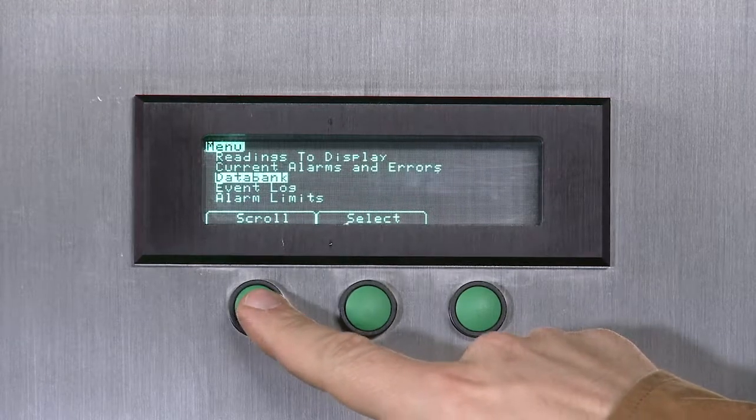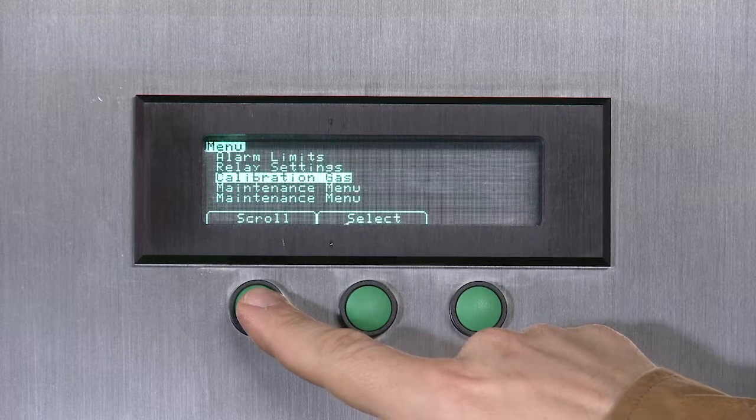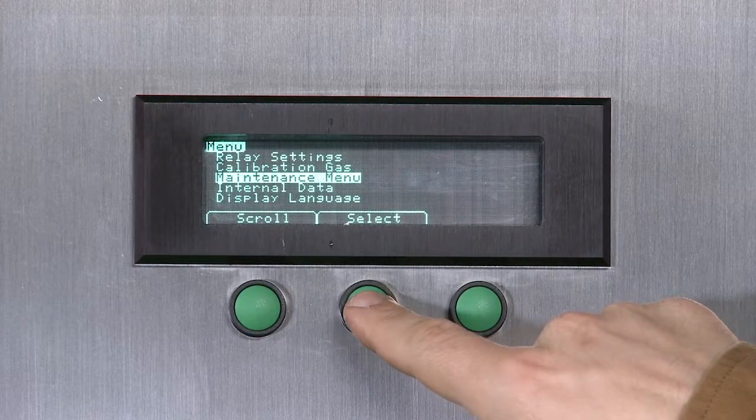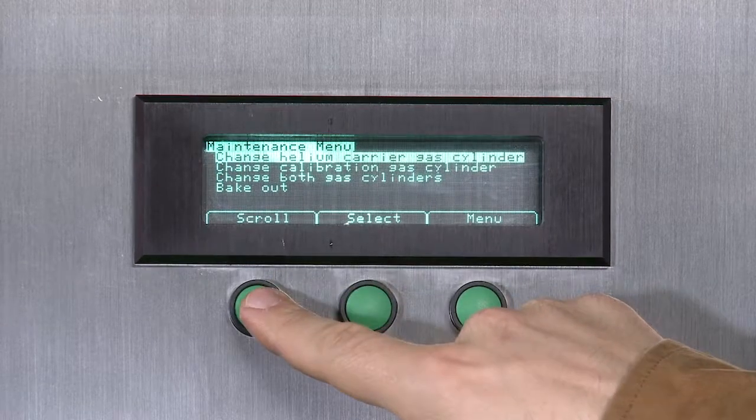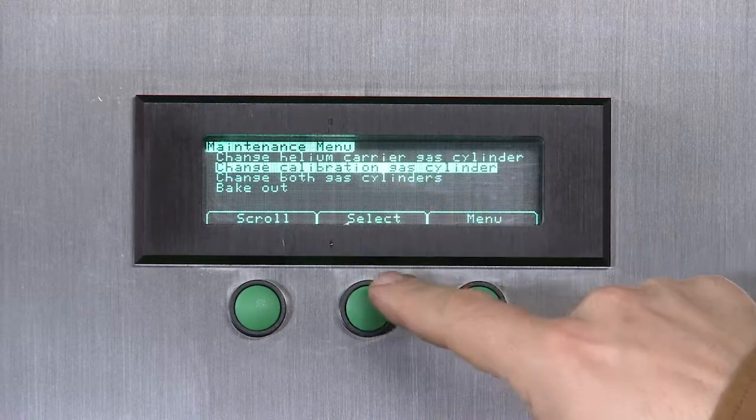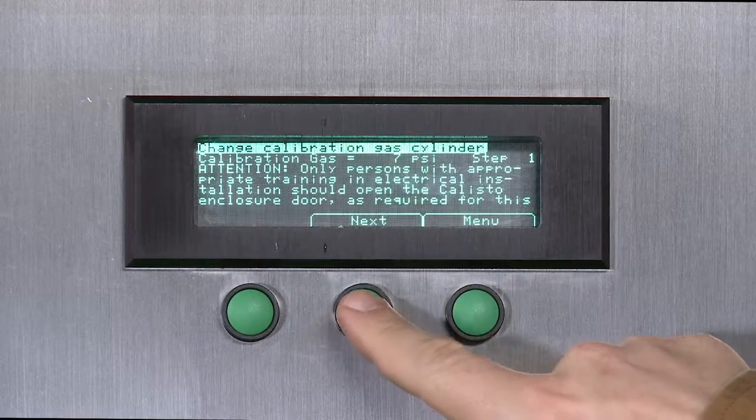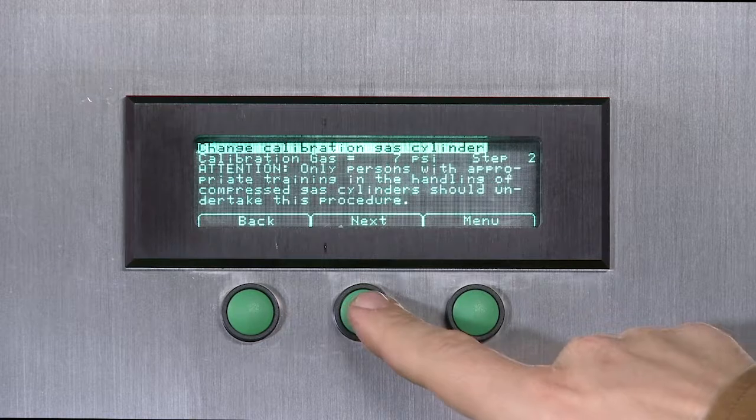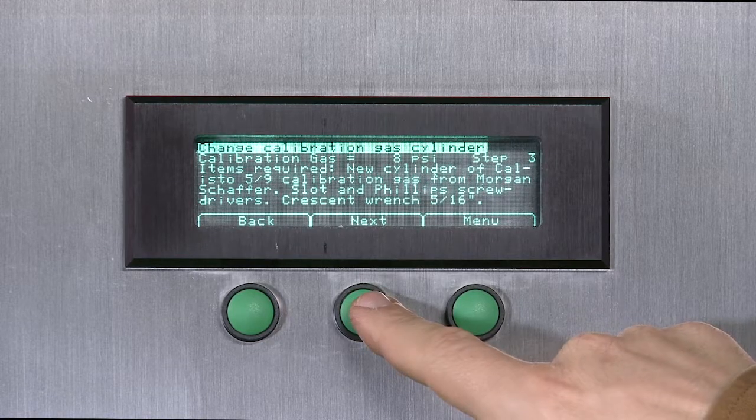On the door of the Calisto, navigate to the Maintenance menu and select Change Calibration Gas Cylinder. Read the on-screen information and press Next for each one. Select Next to begin the procedure.